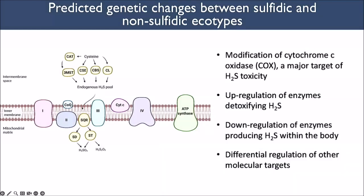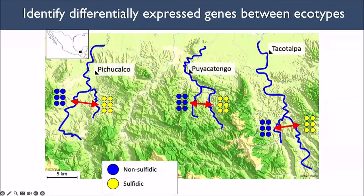Our predictions before the study were: we expected modification of cytochrome c oxidase, which is the major target of toxicity; we expected upregulation of enzymes that detoxify hydrogen sulfide; we expected downregulation of enzymes producing hydrogen sulfide within the body since it's coming in externally; and there are a bunch of other molecular targets as well. We went out into the field and collected individuals from the wild and used these predictions to guide our genome-scale investigation.